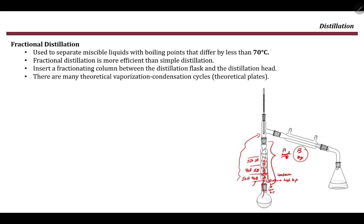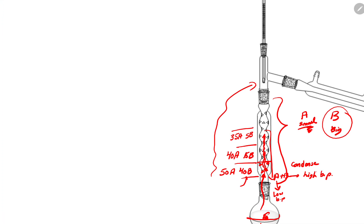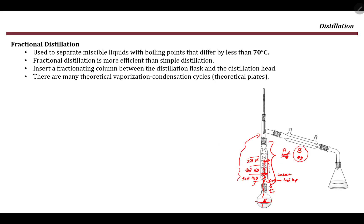Since there are so many equilibria — at each of these glass beads we have an equilibrium between liquid and gas, where once the vapor reaches a bead the liquid moves down and the gas moves up — fractional distillation is known to have many theoretical plates.